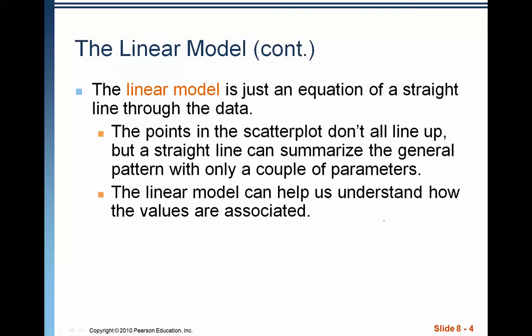So the linear model is just an equation of a straight line through the data. It's a slope intercept form equation, Y equals MX plus B. The points in the scatter plot are not going to line up completely, but based on the linear trend of the points, we can use a straight line to summarize the pattern. And that can help us understand how all of the values are associated.